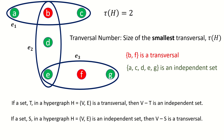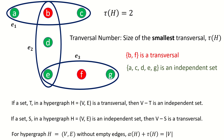Additionally, for hypergraphs without empty edges, if a set S is an independent set, then its complement is a transversal. This is because no edge has all its vertices in S, by definition of independent set, so every edge has to have at least one vertex not in S — that is, every edge has at least one vertex in the complement of S, meaning the complement of S is a transversal.